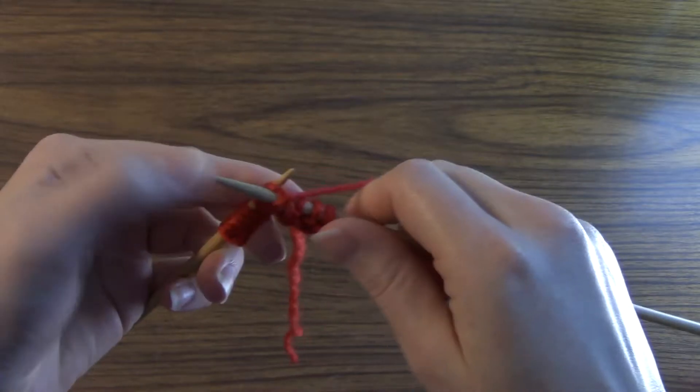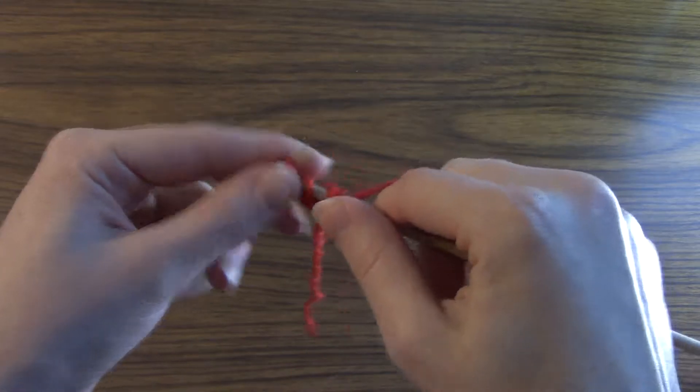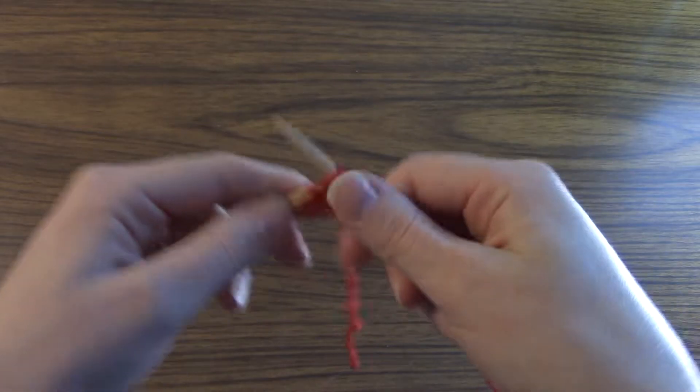So through, wrap, push, and off. Now if you were to purl every single stitch for every single row, you'd be working in a purled garter stitch.